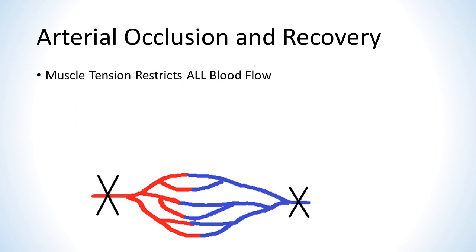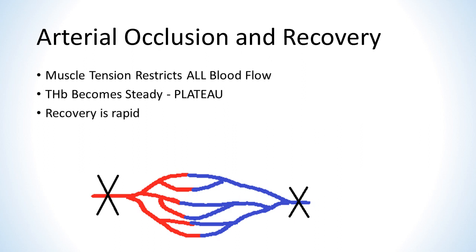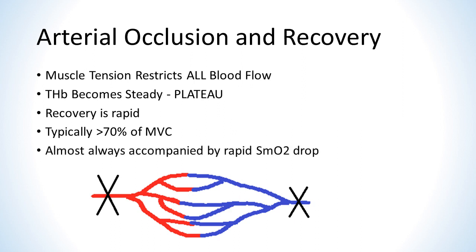An arterial occlusion occurs when muscle tension is high enough to restrict blood flow completely. Since there is no flow in or out of the muscle, THB becomes steady and shows up as a plateau on the graph. When tension is released, THB quickly returns to its value prior to the muscle tension, just like a venous occlusion. Arterial occlusions typically require a very high contraction force — often higher than 70% of maximum voluntary contraction — though some athletes may not be strong enough to cause a clear arterial occlusion even at 100% of MVC. Since arterial occlusions completely stop blood flow under very high load, they are almost always accompanied by a rapid drop in SMO2. It is also possible to create an arterial occlusion with an external means such as a tourniquet, which will still cause an SMO2 drop, although less rapidly.